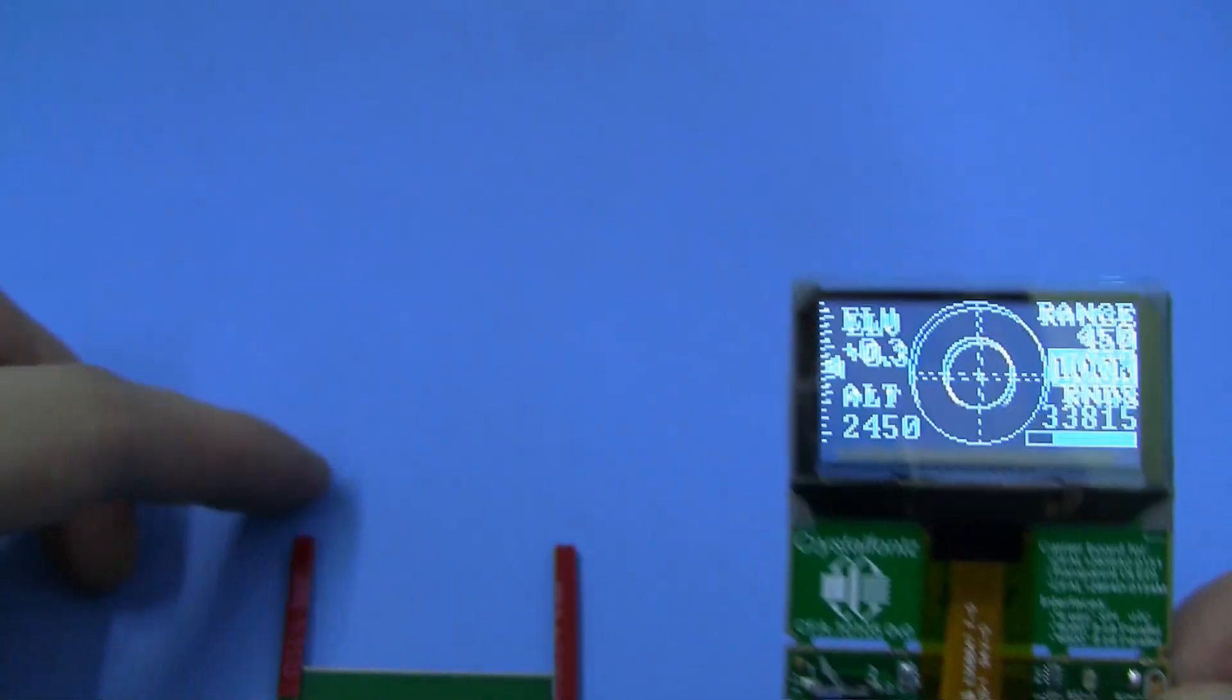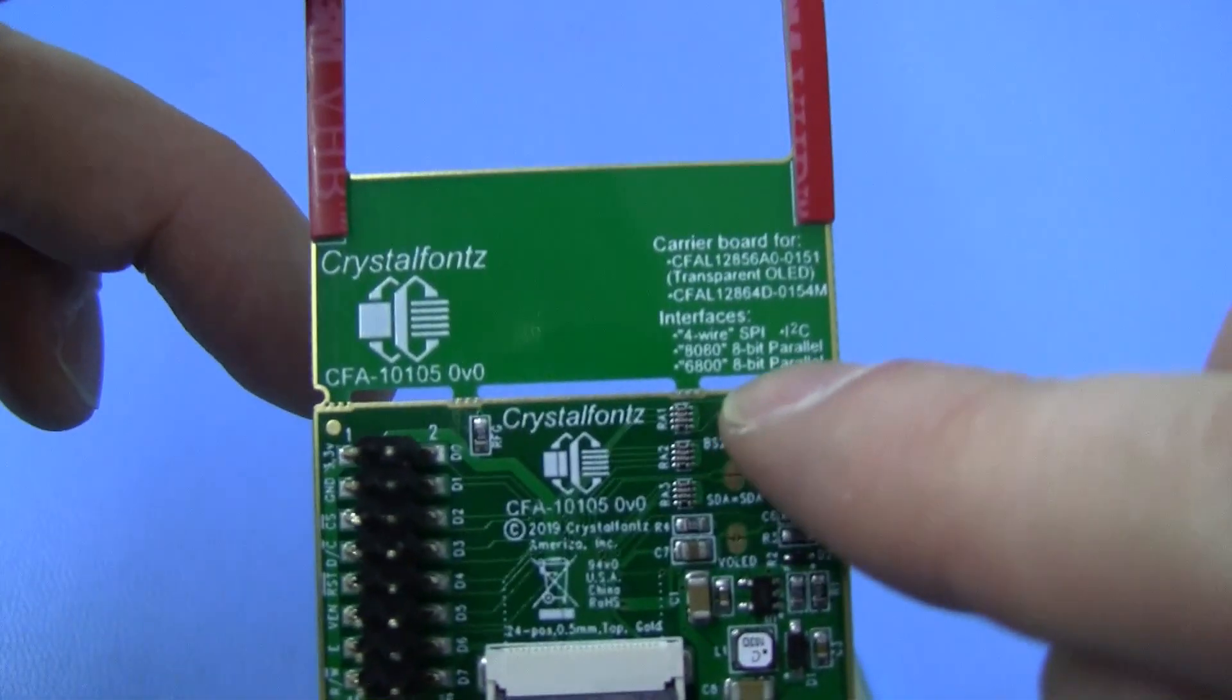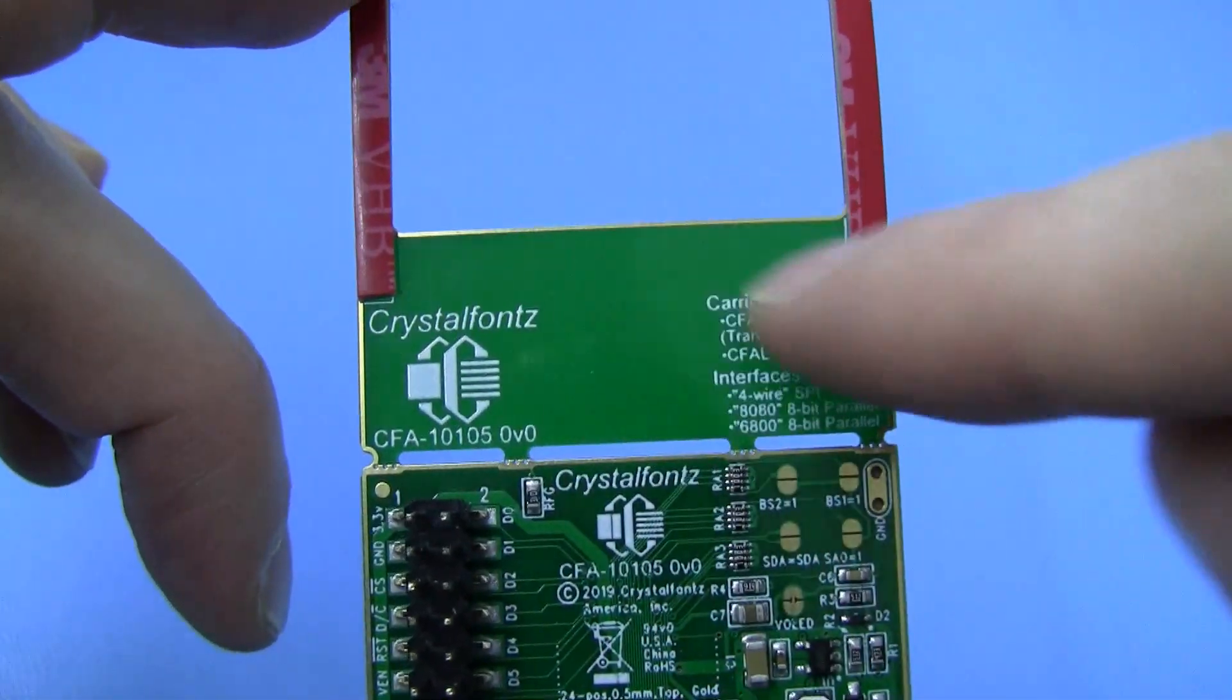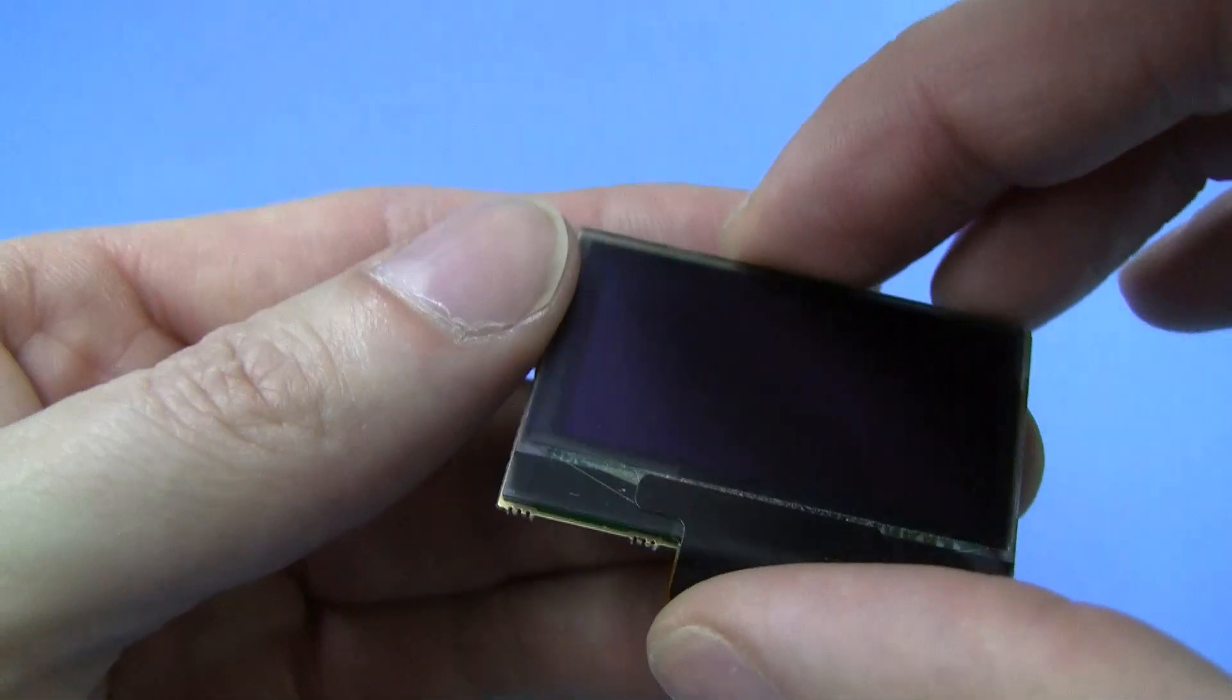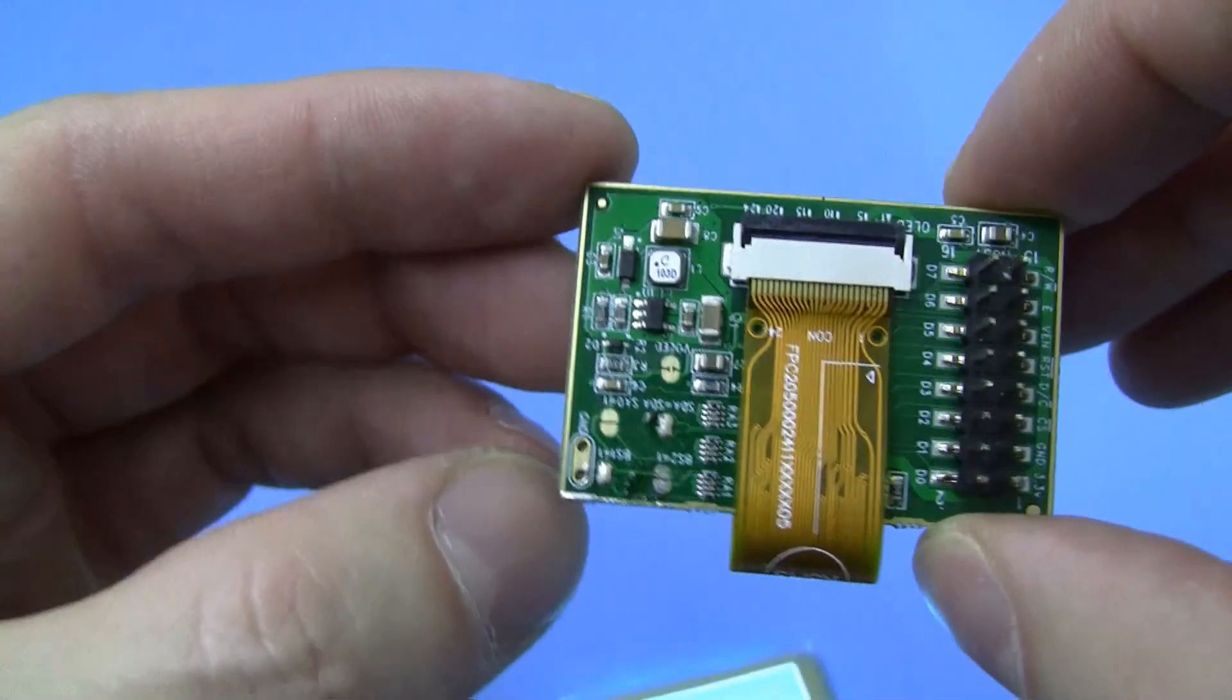Alternatively, you can snap the board right there and snap off this portion and then mount your display on the back of the board.